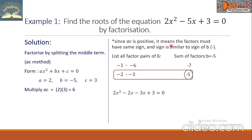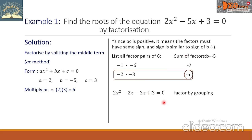Now we rewrite the original equation, splitting the middle term using this factor pair. So we have 2x², and the -5x becomes -2x and -3x, then we copy the constant: + 3 = 0. From here we factor by grouping, grouping the first two terms together and the last two terms together.